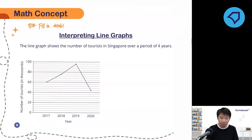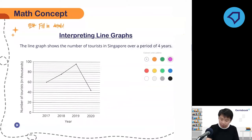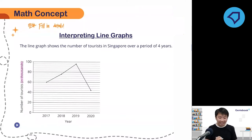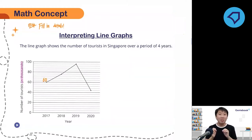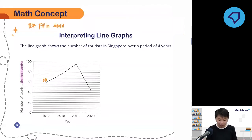What is given over here? This is something very crucial. The number of tourists here is in thousands. Can you see the axis? It tells you everything. In 2017, you can see this is 60 — it doesn't mean just 60 tourists, but 60,000 tourists. In 2018, it doesn't look like it coincides anywhere — it's in the middle of the line.